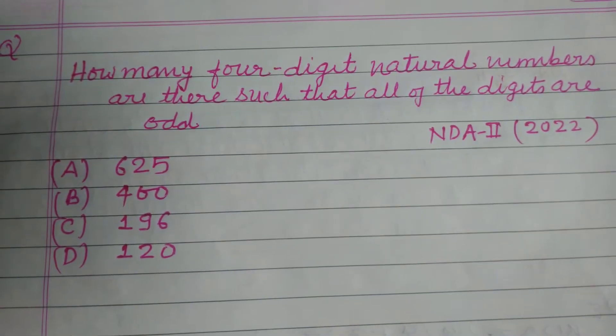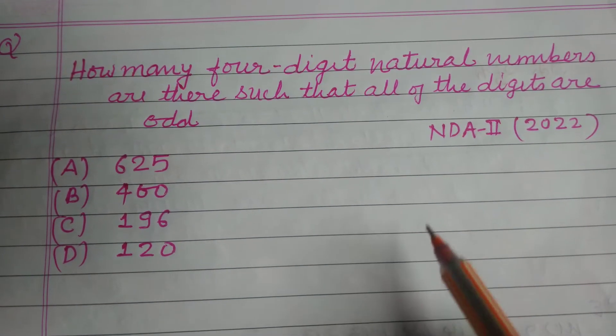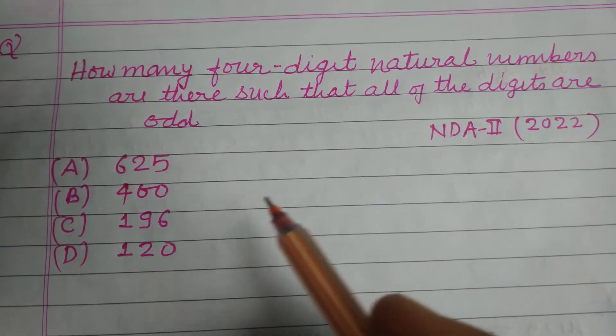Here is a question from NDA 2nd 2022 based on permutation and combination. How many four-digit natural numbers are there such that all of the digits are odd?